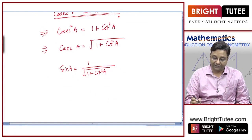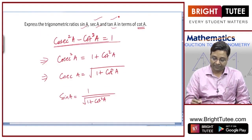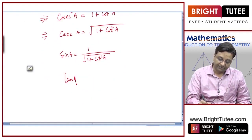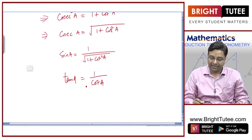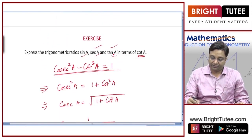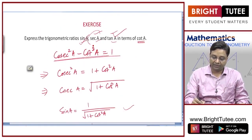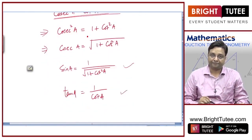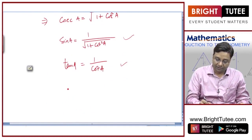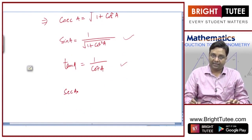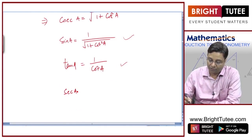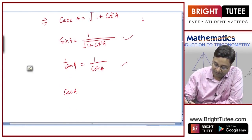Tan a is nothing but one by cot a, so tan a can be written directly in terms of cot a. Sine a I have already written in terms of cot a. What is left is secant a.